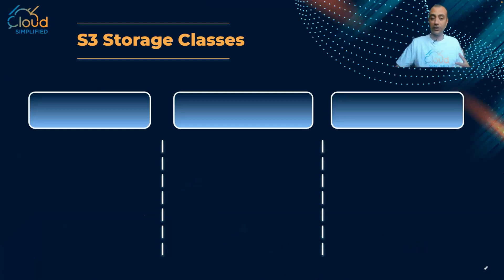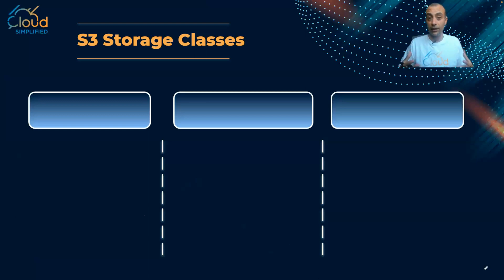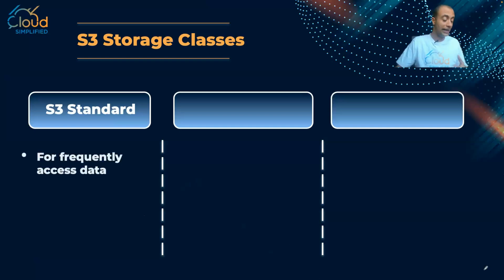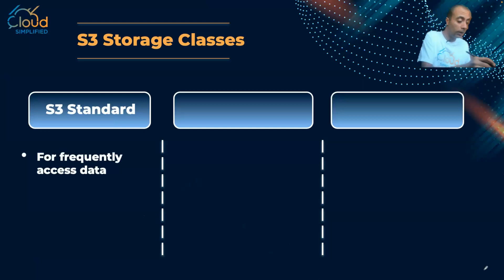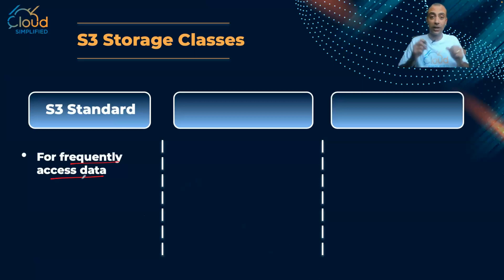For S3 I have multiple options of storage, and this is what we call storage classes — or if you come from a storage background, what we used to call storage tiering. The first tier or first class is what we call S3 Standard. S3 Standard is the class or tier where I store my frequently accessed data. This is usually the fastest type of storage, where data will be accessed frequently.